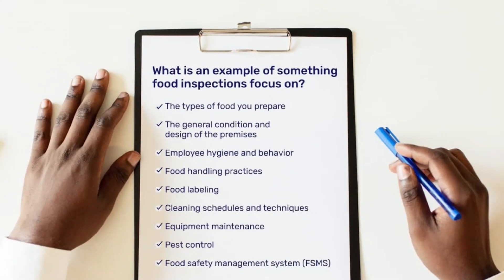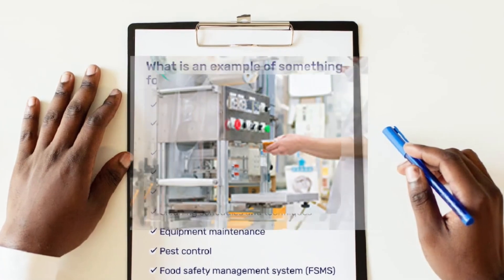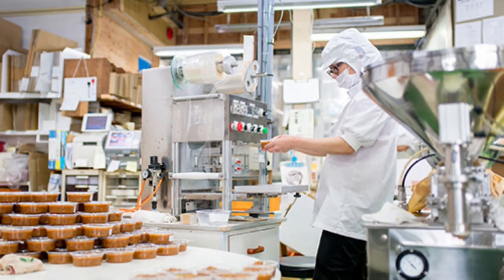For individuals like you running a small business, compliance can feel overwhelming. With Interlink IQ, our system helps you manage programs, policies, and procedures, giving you peace of mind knowing all safety protocols are in one place. Focus on your business while we handle your compliance needs.